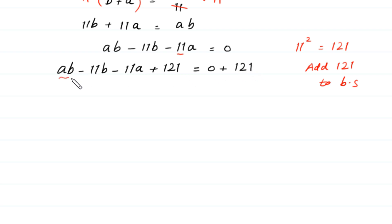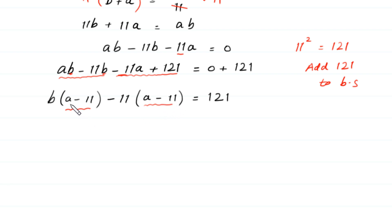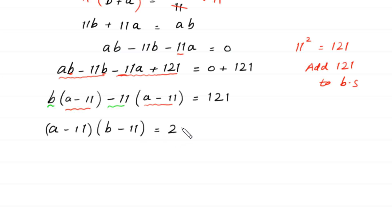From the terms AB minus 11B, we factor out B to get B times (A minus 11). From the terms negative 11A plus 121, we factor out negative 11 to get negative 11 times (A minus 11). So (A minus 11) is a common factor, giving us (A minus 11)(B minus 11) is equal to 121.